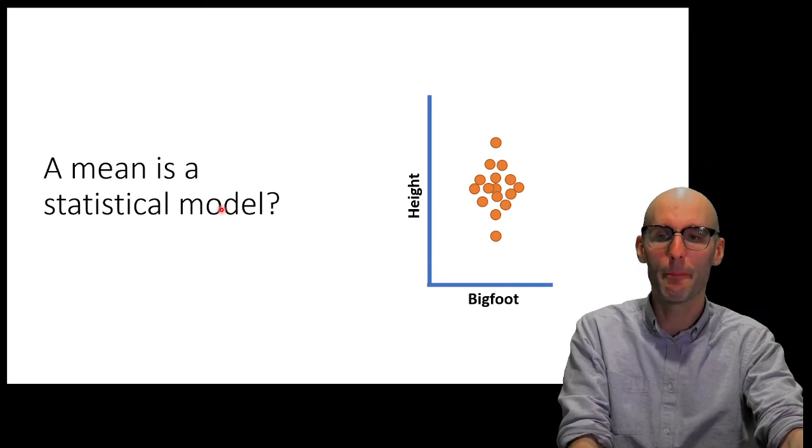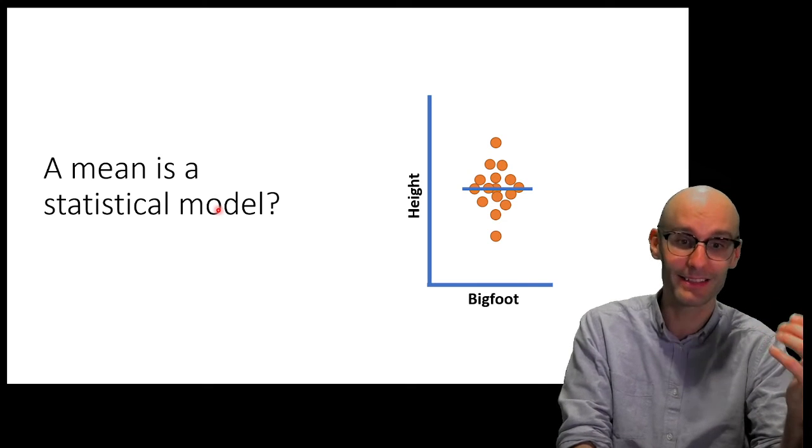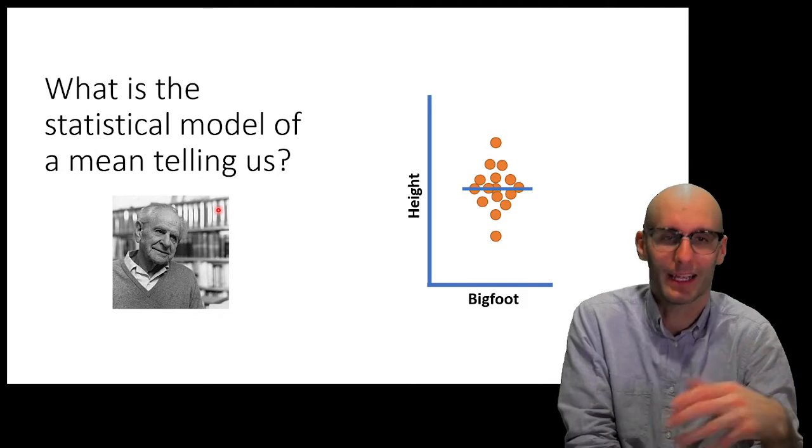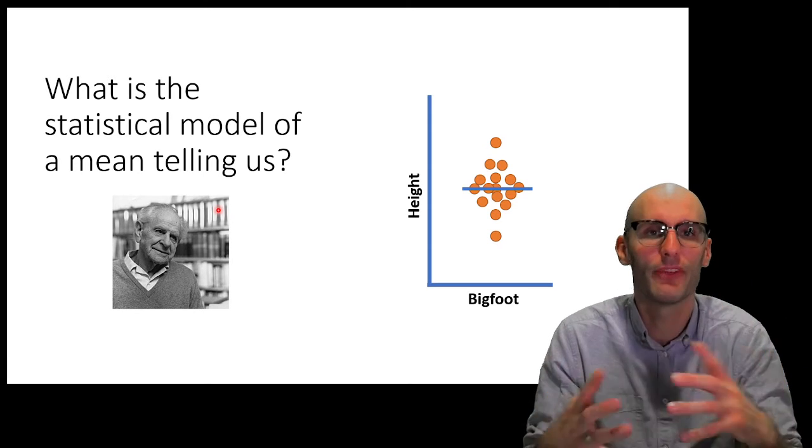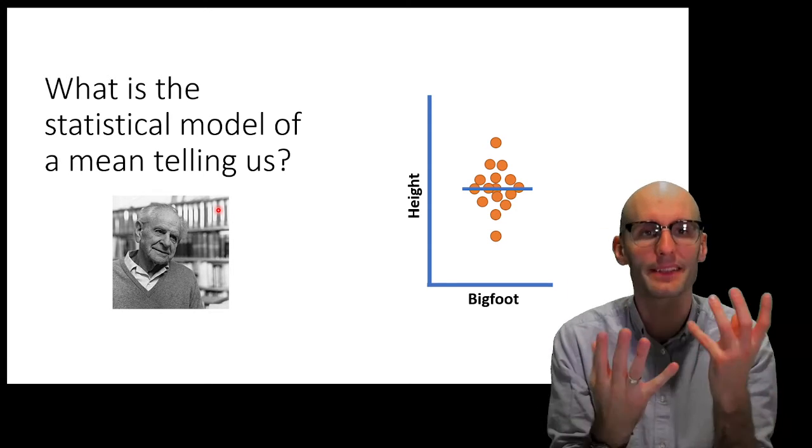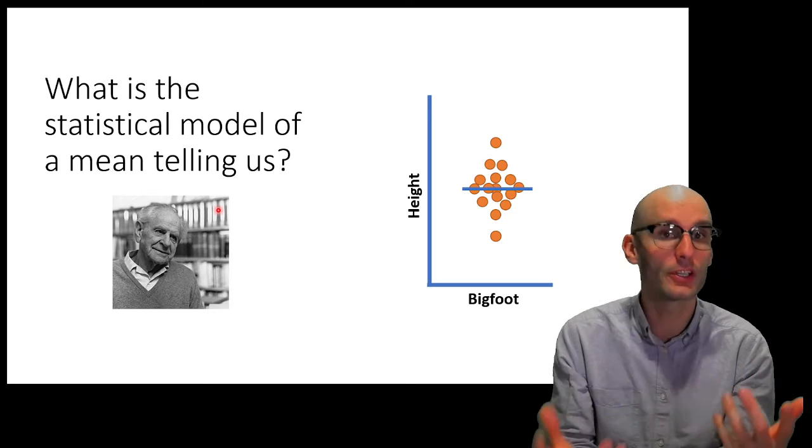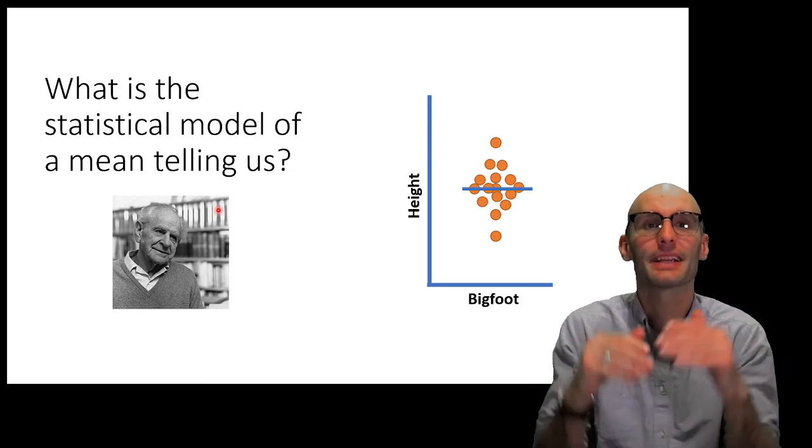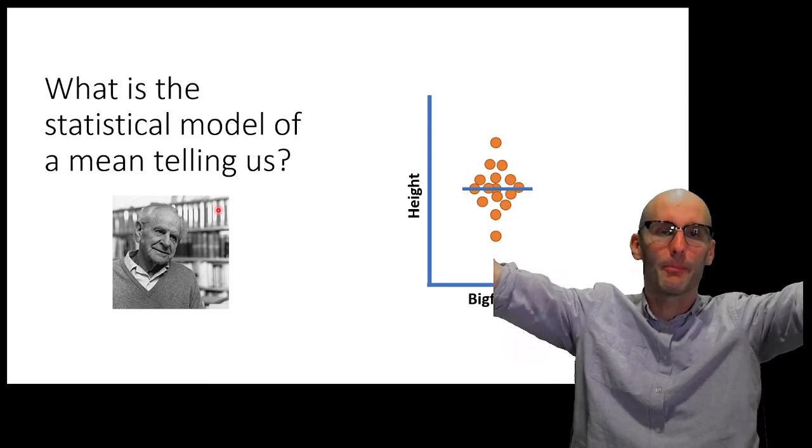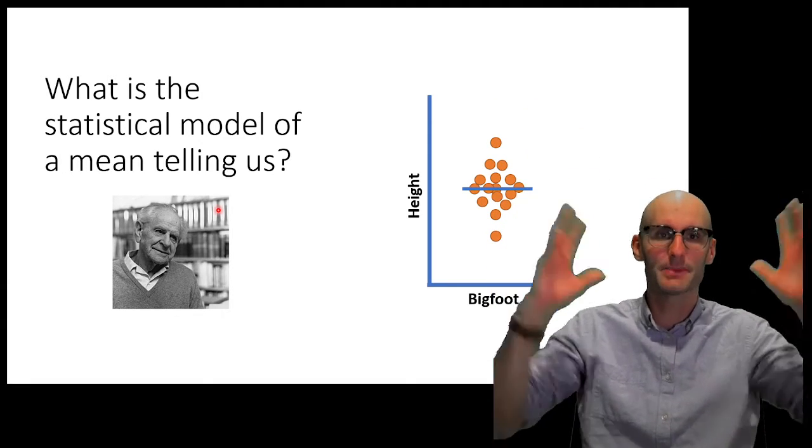Here we've got height of big foot is the population. A mean is a statistical model. Yes, a mean is a statistical model. What is it telling us? What is it trying to predict? Well, it's trying to predict the expected value. What would you expect to get if you sampled a single big foot? What would you get on average if you sampled a bunch of big foots? This is what a mean is trying to predict. It's trying to tell you what the mean of the population is and it's using the mean of the sample to make that estimate.